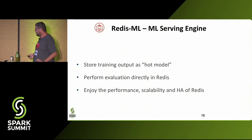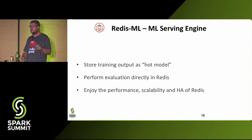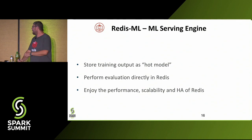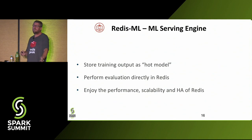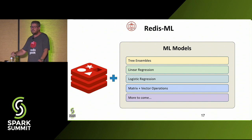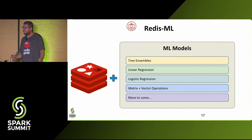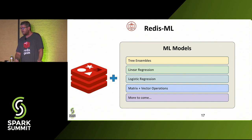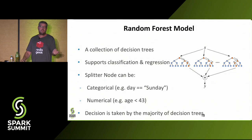The models are stored in Redis ML as real hot objects that can evaluate requests, and you keep the usual performance and scalability of native Redis. Right now it's a pretty new module. The supported machine learning models are tree ensembles for random forests and gradient boosted trees, linear regression, logistic regression, and matrix and vector operations. More are going to come. For today's demo, I'm going to use a random forest — it's a pretty popular and efficient algorithm.